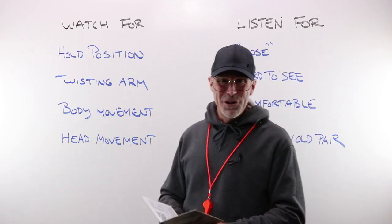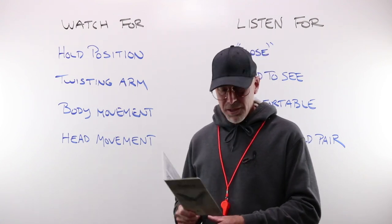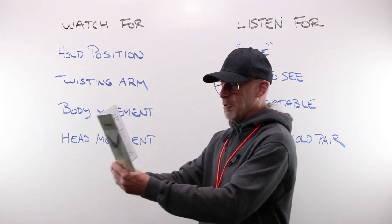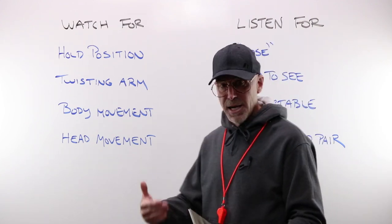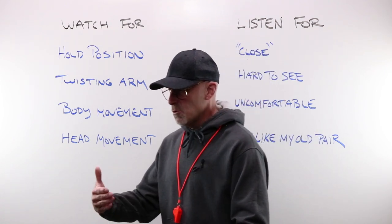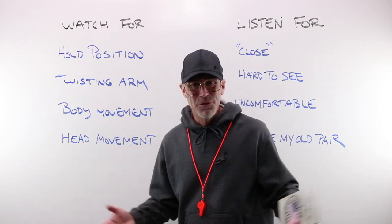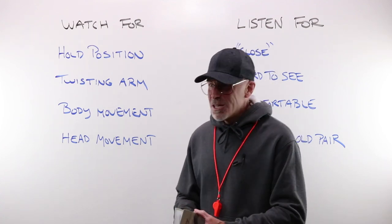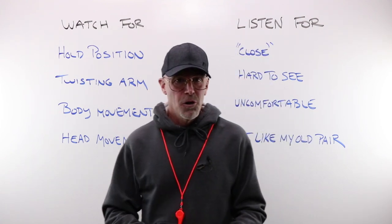Watch for the old twisting arm. If you see the person — maybe you stepped away for a second, they put their glasses on, or you're walking by watching someone else — and they're doing one of these stretches with the arm. The old twisting arm is a pretty good clue that they might be a little bit overplussed. Watch for body movement: if they're at a desk looking at a computer and they wheel their chair back and forth trying to find the focal length that works for them, that's a sign. Watch for head movement — watch for the old bobbing.